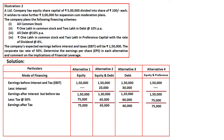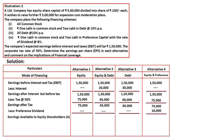From earnings after tax, we deduct preference dividend. Preference dividend applies only to Alternative 4. In Alternative 4, we are raising ₹2 lakhs through preference shares at 8%, so preference dividend = ₹2 lakhs × 8% = ₹16,000. Alternatives 1, 2, and 3 have no preference dividend. After deducting preference dividend, we get earnings available to equity shareholders for each alternative.